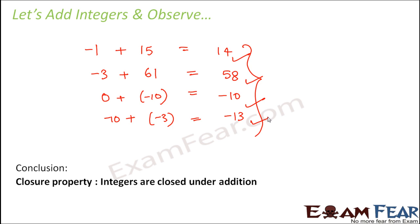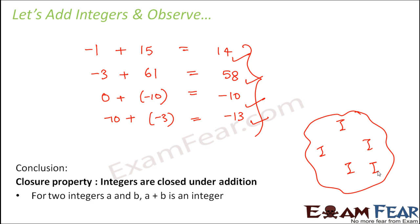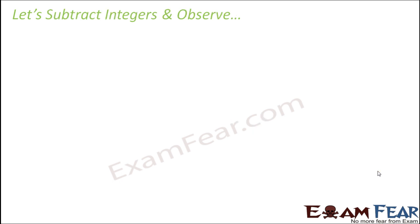Closure comes from the word 'closed' — integers are closed. Integers have a house of their own where only integers reside, and as far as addition is concerned, integers remain closed within their house. Only integers will be involved in the addition of integers. So for any two integers a and b, a plus b is always an integer.